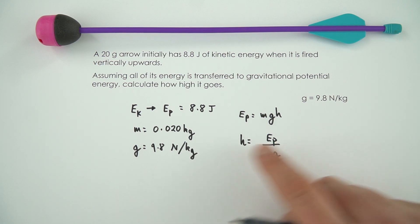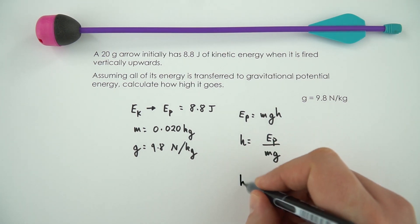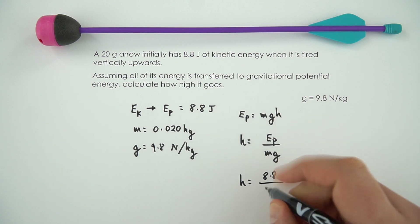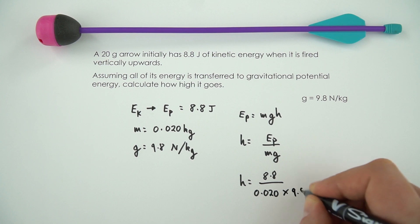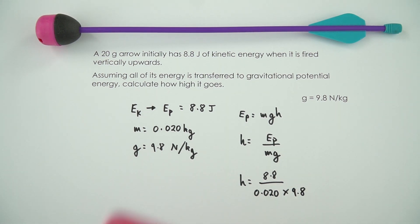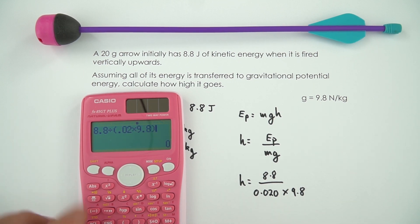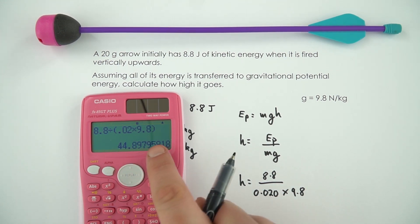If we know these values, we can find the height. That's going to be 8.8 divided by 0.020 times 9.8. Putting this into my calculator: 8.8 divided by 0.02 times 9.8, putting that in brackets.